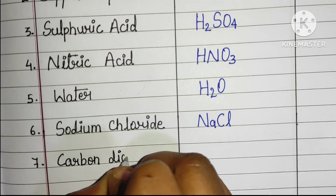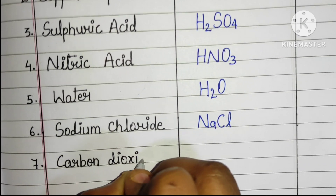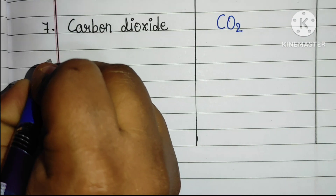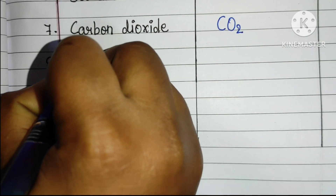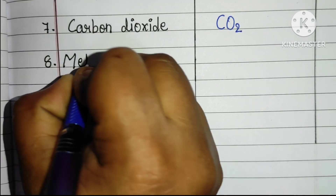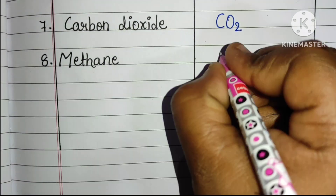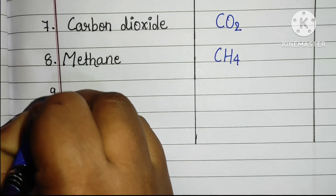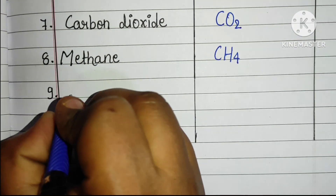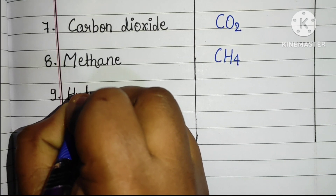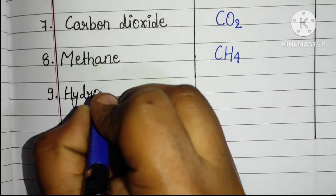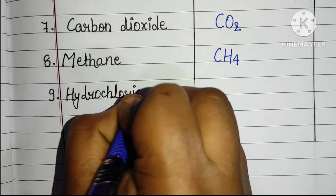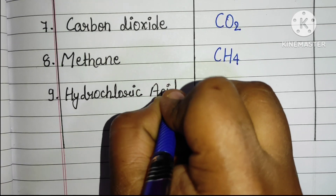Number seven: carbon dioxide, CO2. Number eight: methane, CH4. Number nine: hydrochloric acid.